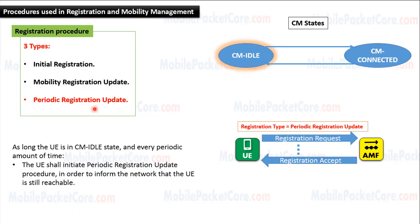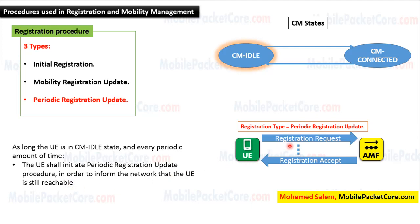Now let's learn the Periodic Registration Update Procedure. The Periodic Registration Update is used when the UE is in CM idle state. As long as the UE is in CM idle state, at every periodic amount of time, the UE shall initiate the Periodic Registration Update Procedure in order to inform the network that the UE is still reachable. In this procedure, the UE sends a registration request to the AMF, including registration type equals to Periodic Registration Update.